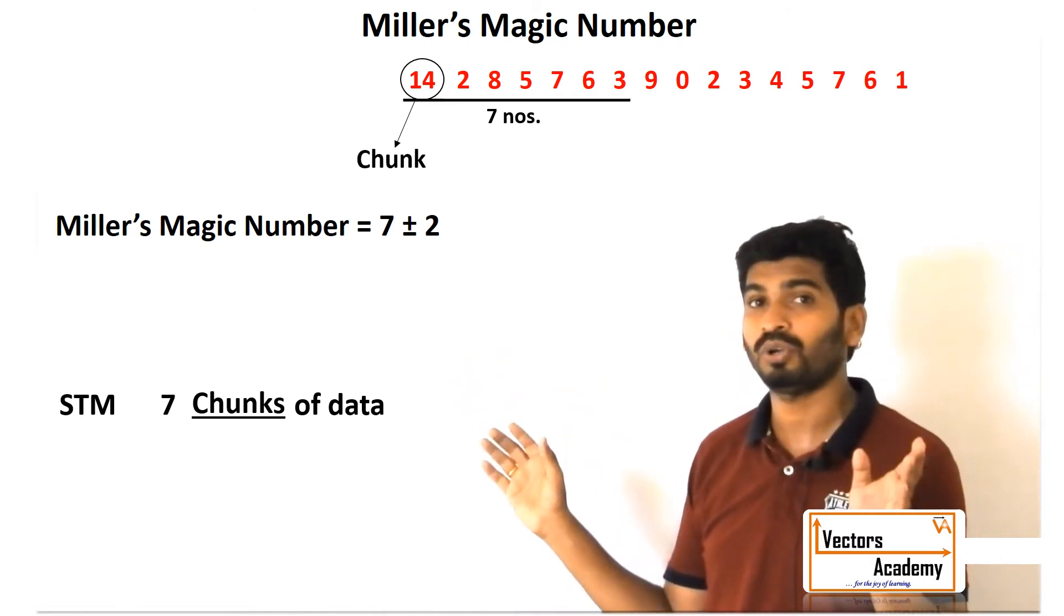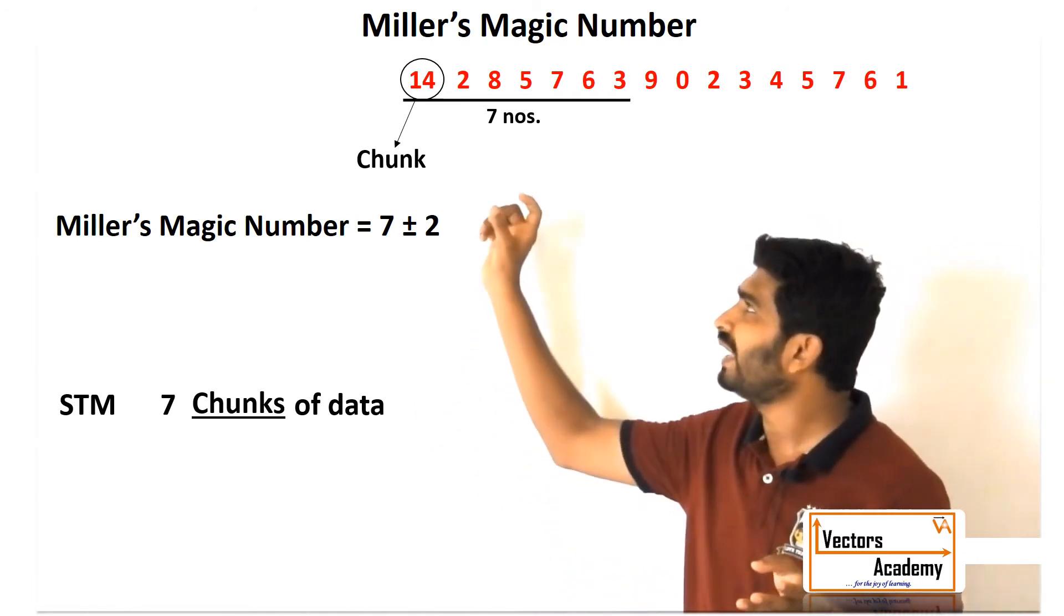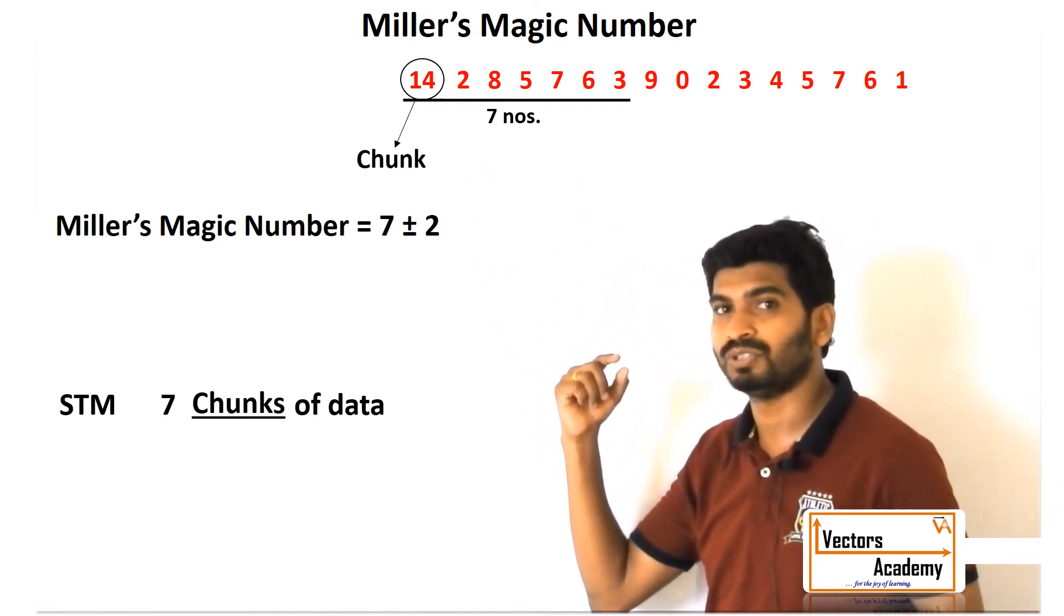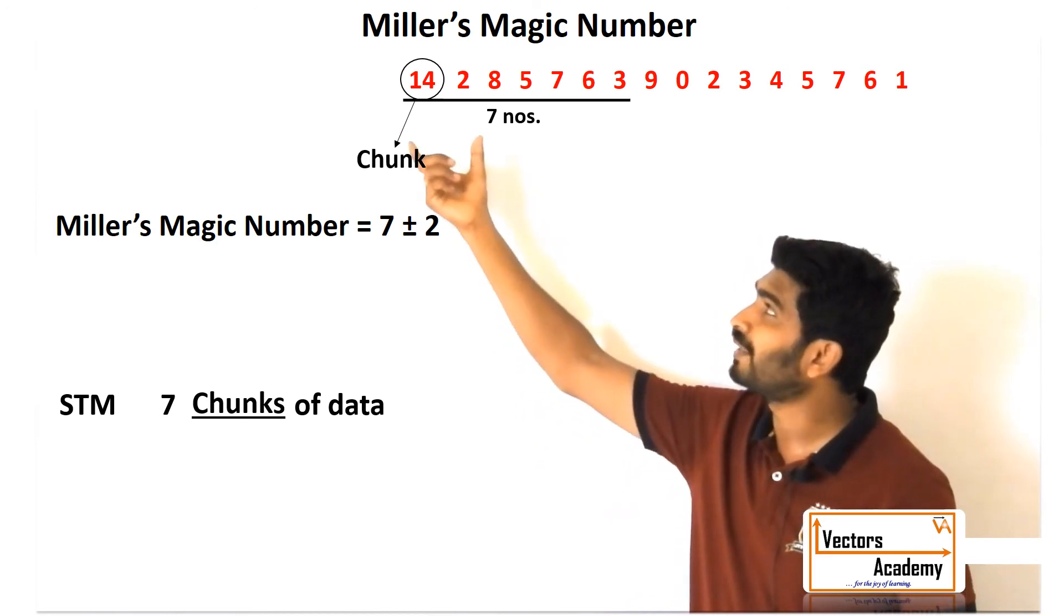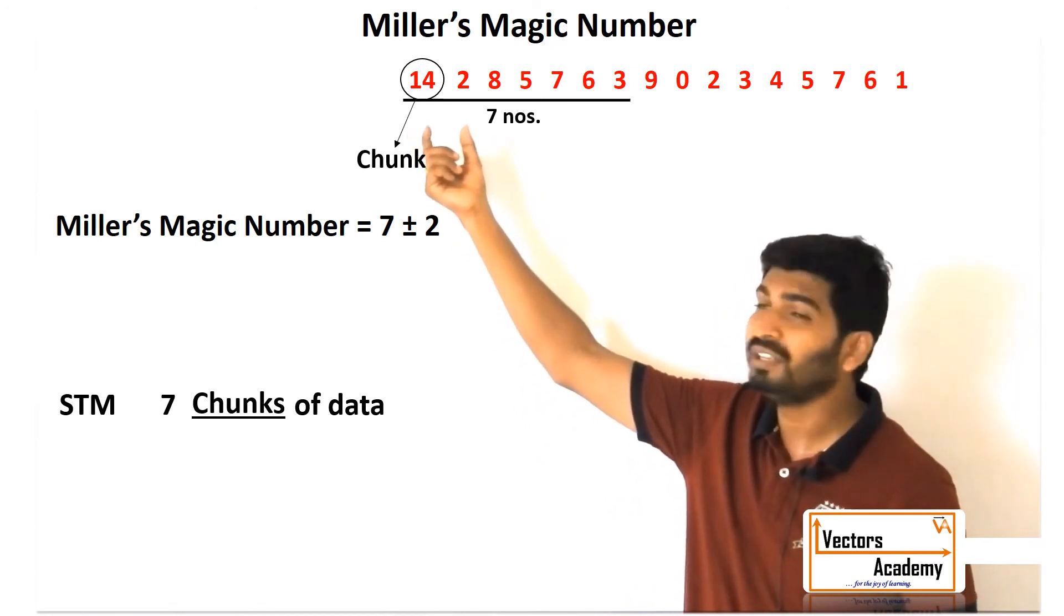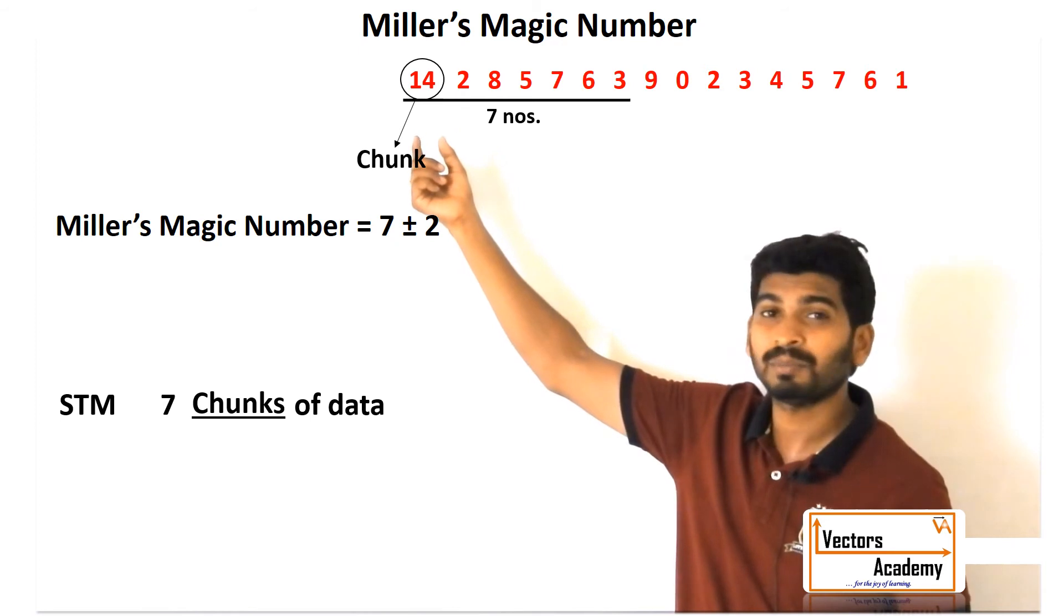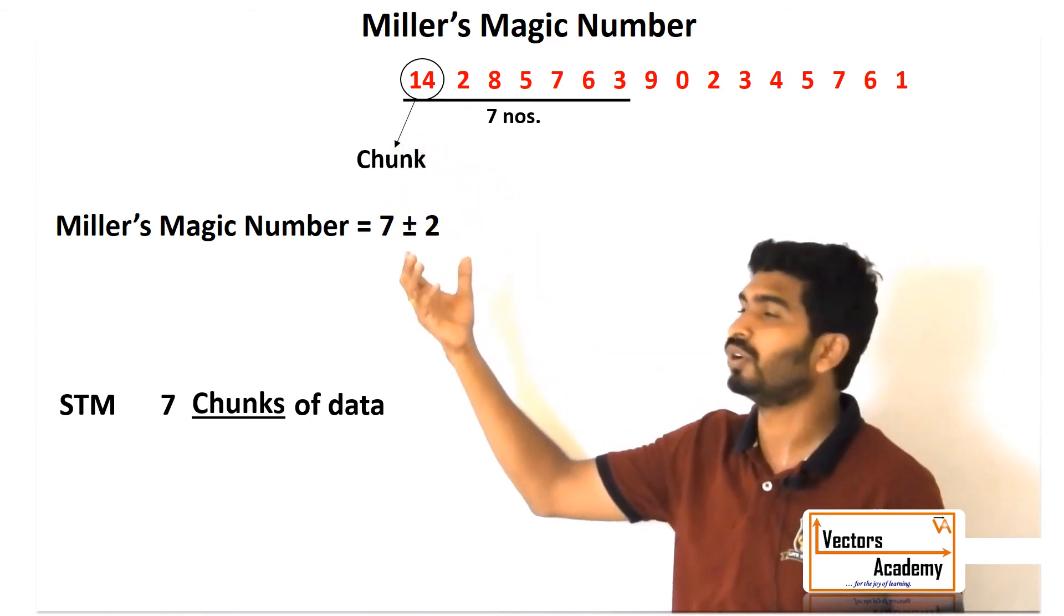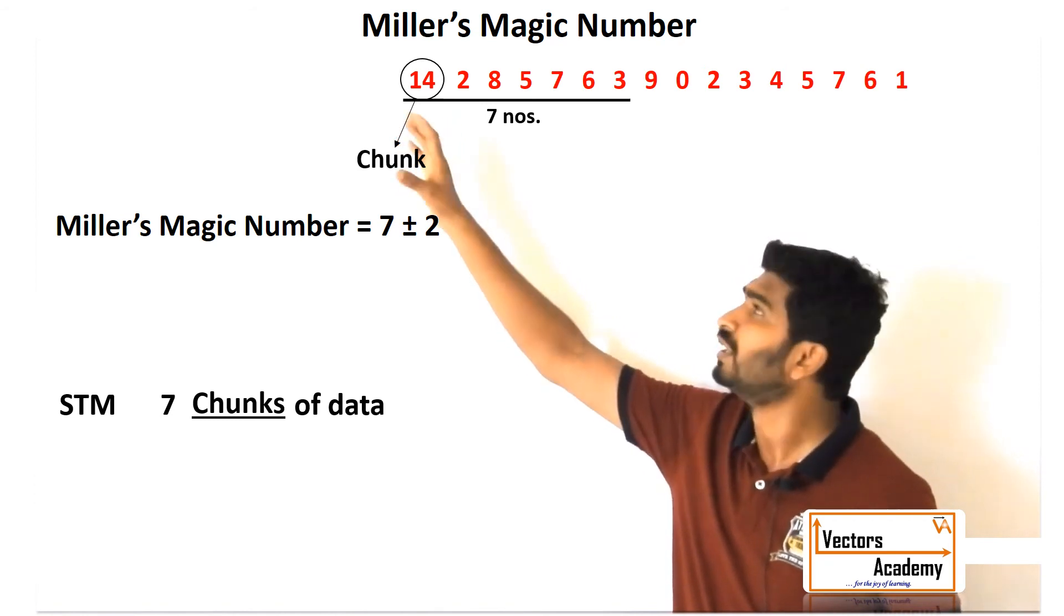Now again, the chunks of data depend upon the capacity of the individual. An individual might not be able to get three or four numbers together—they might just be able to get two numbers together. Some who are quite extraordinary can get five numbers together, so they can remember more numbers.